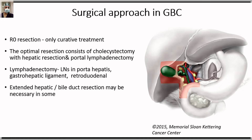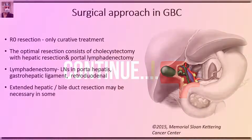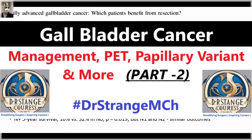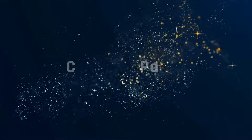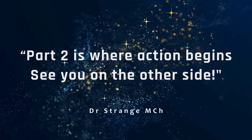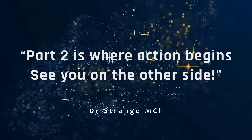Extended hepatic or bilateral resection may be necessary, which will be covered in the multivisceral resection section along with rationale, benefits, and disadvantages. The picture from the Memorial Sloan Kettering paper shows all areas highlighted in pink that must be cleared as part of radical extended cholecystectomy. Detailed surgical video demonstrations in three parts are available on the channel. This concludes Part 1. Part 2 will address multivisceral resection, the papillary variant of gallbladder cancer, the role of adjuvant therapy, and research gaps. Please like, subscribe, and hit the bell icon for future updates.